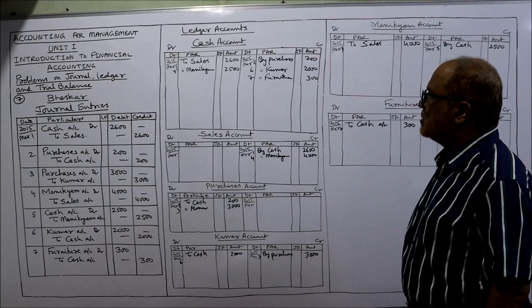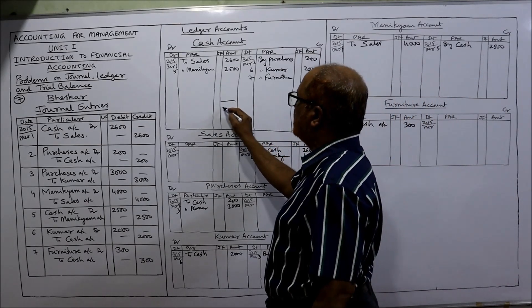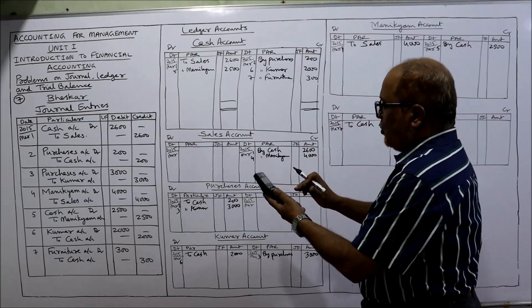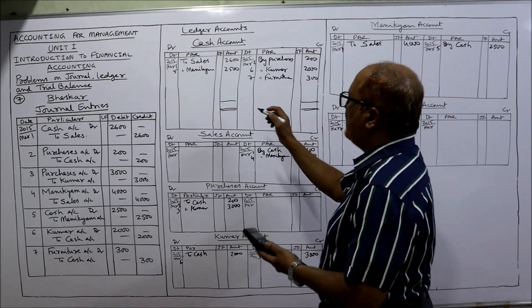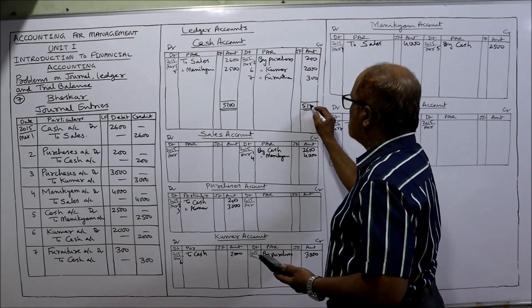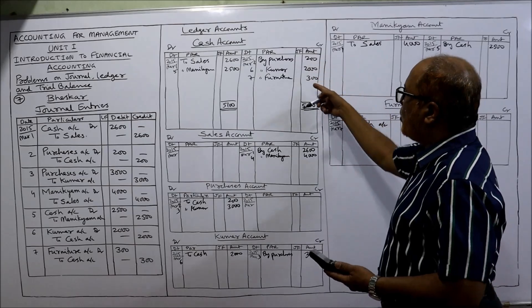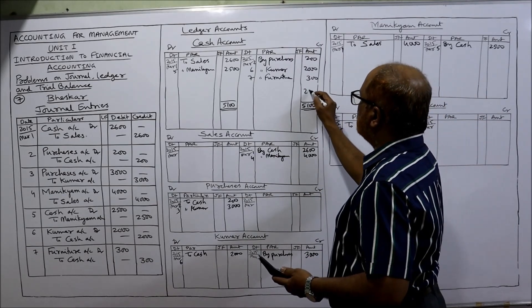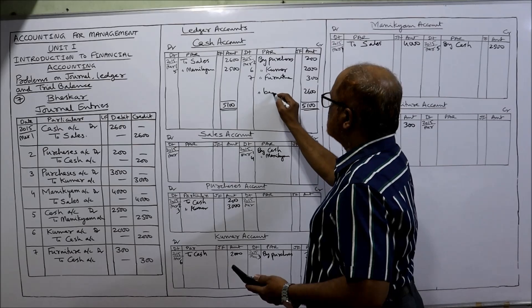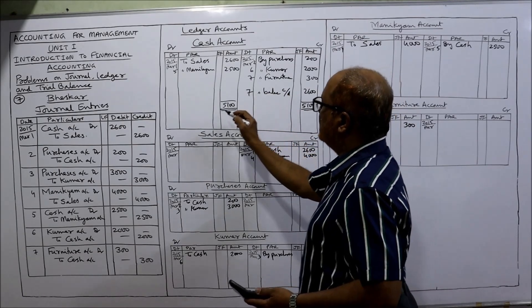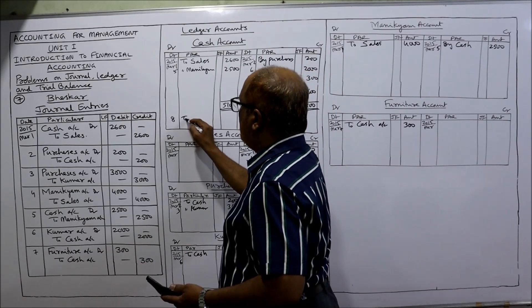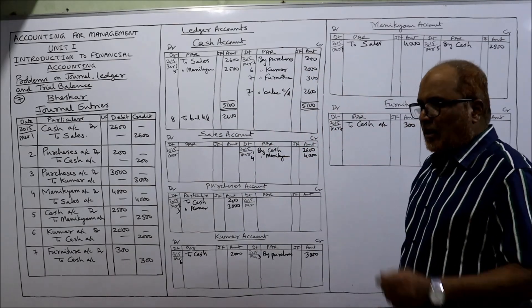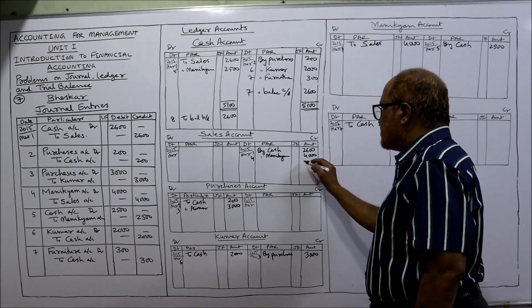Now we have to find out the balance. Balancing the cash account: debit side total — 2600 plus 2500 equals 5100. Credit side total is also 5100. From 5100, deduct 200, 2000, and 300 — balance is 2600. This is the balance carried down, date 7th March. Next date 8th March: 'To balance brought down — 2600.' Total on both sides: 5100.